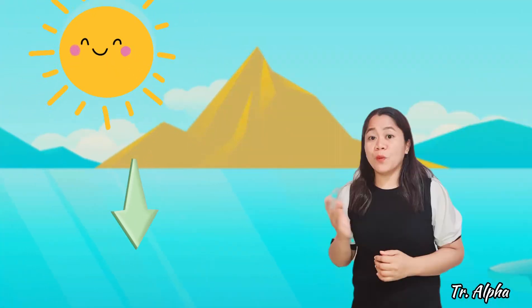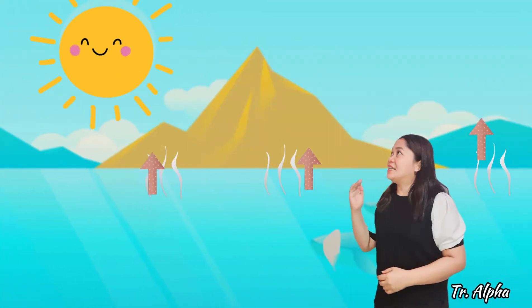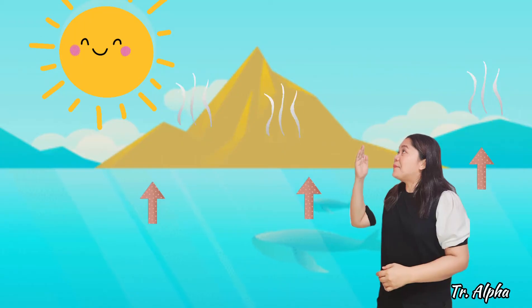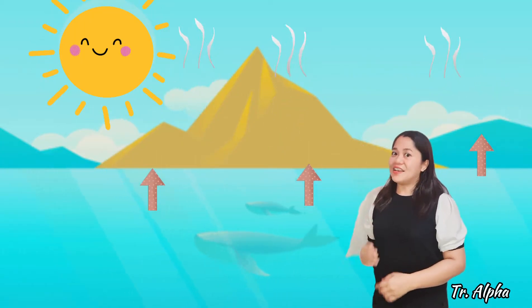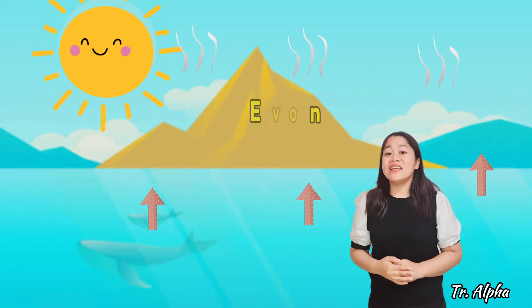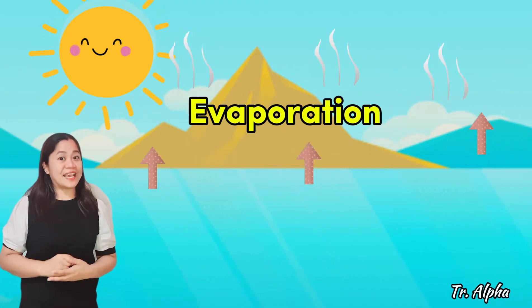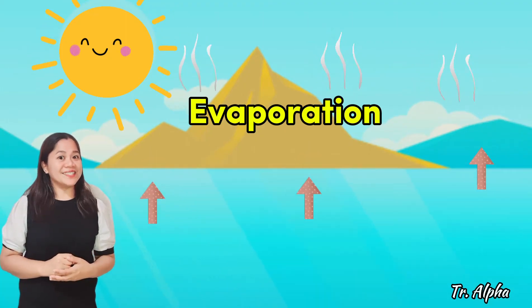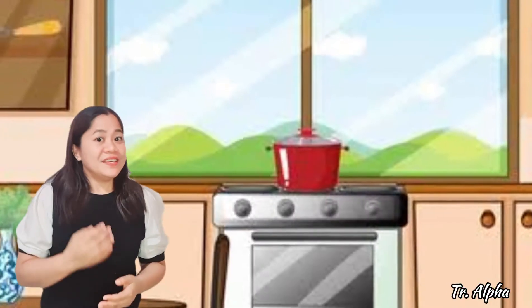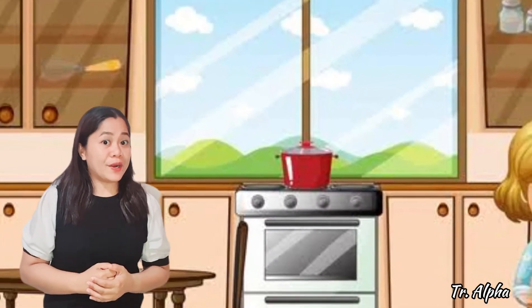Water becomes water vapor and it rises up in the air. This process is called evaporation, and it is the first step of the water cycle. You too can see water vapor at home when you heat some water.